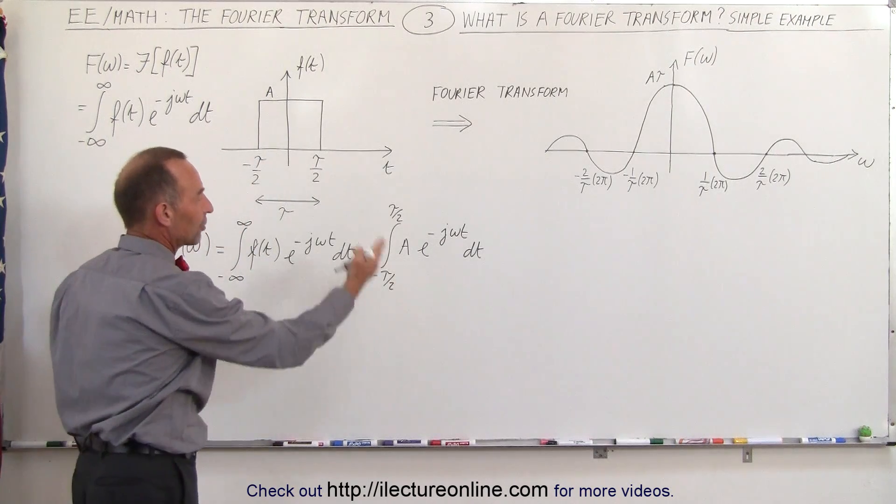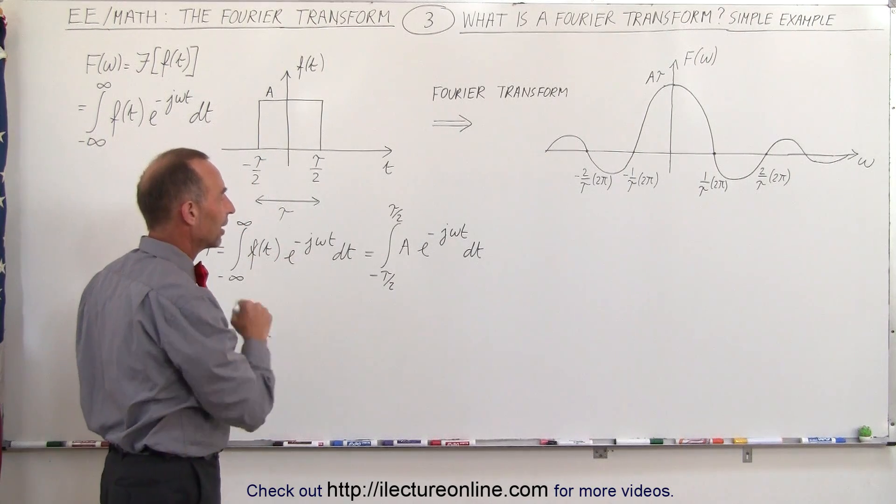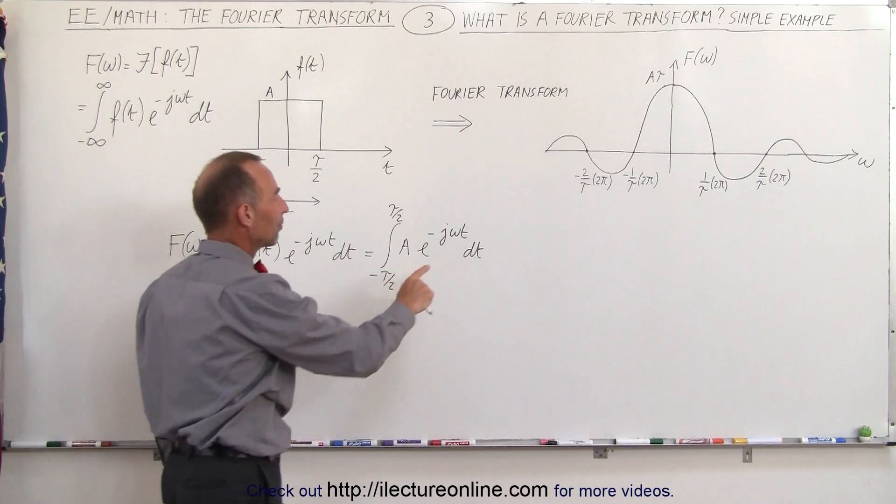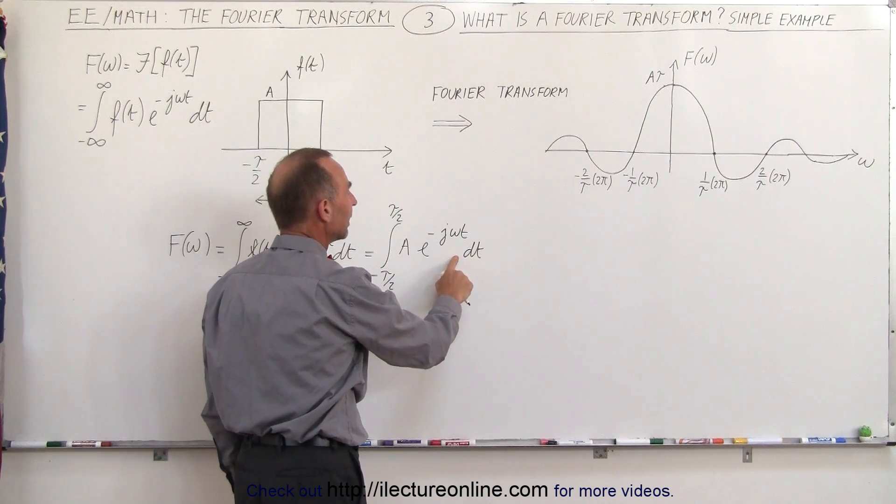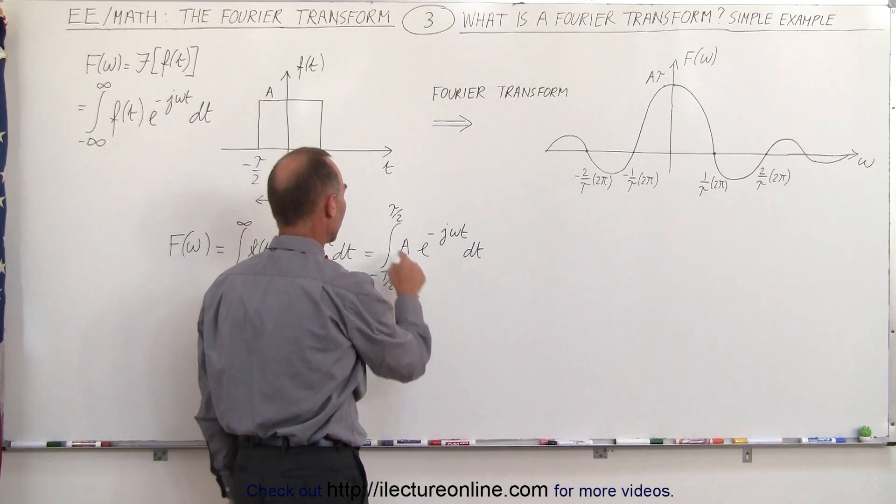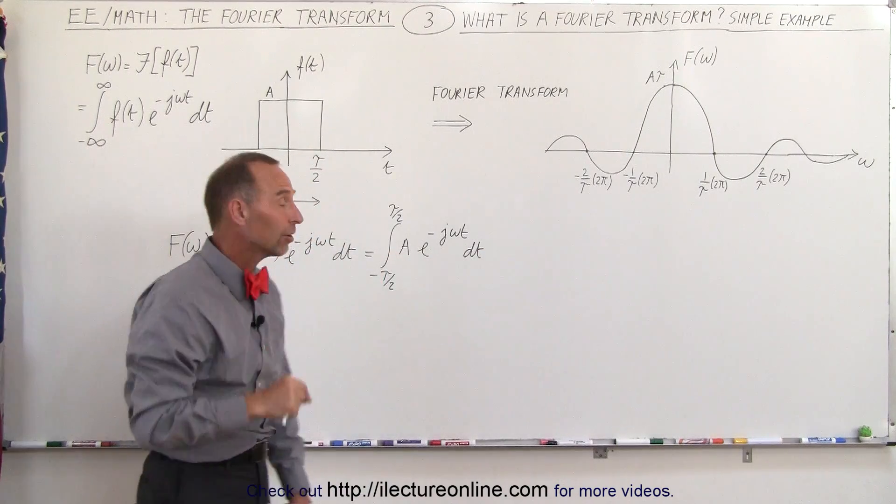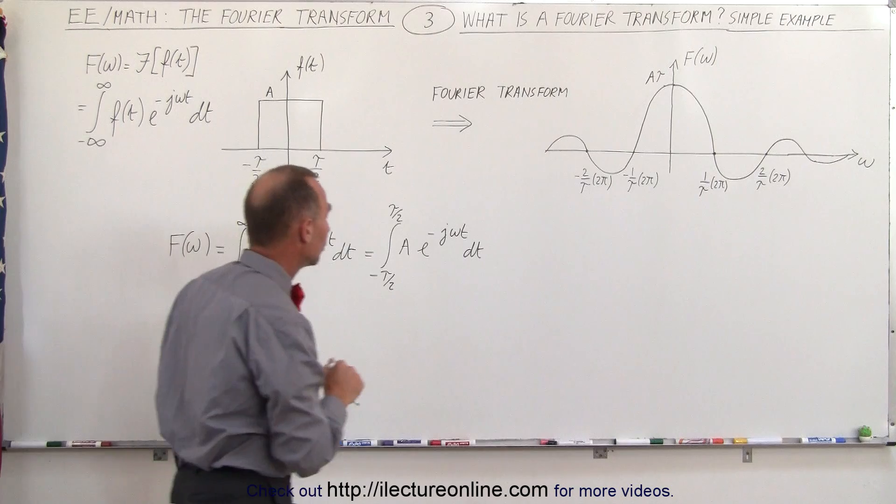And of course we know that we can factor out an A, we can pull it outside the integral sign, but we also have to have the proper differential here. We're going to need a minus j omega dt as the proper differential, so we also have to divide by minus j omega.